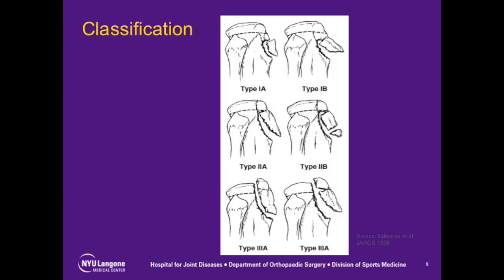Tibial tubercle avulsion fractures are classified according to the Watson-Jones classification. Type 1 fractures are the most common and are separated into type 1a, which show an incomplete separation of the fragment from the metaphysis, and type 1b, which show a complete separation with the avulsed fragment displaced proximally. In type 2 fractures, the tubercle epiphysis is lifted anteriorly and proximally, separating the tuber ossification center as well as partially separating the non-articular portion of the proximal tibial epiphysis. Type 2a fractures are non-comminuted, and type 2b show comminution of the fracture fragments.